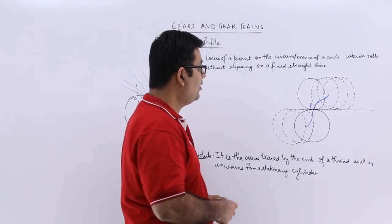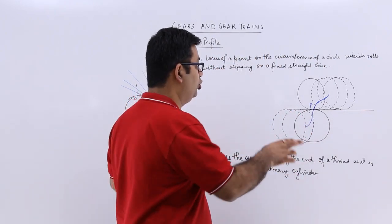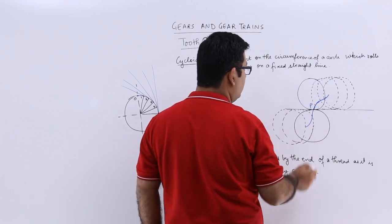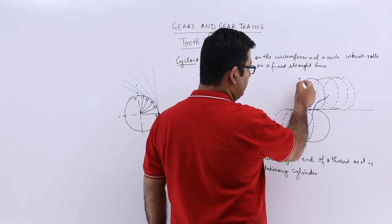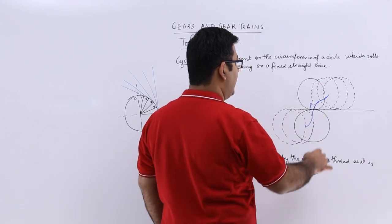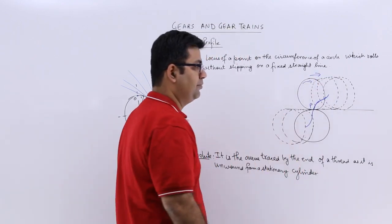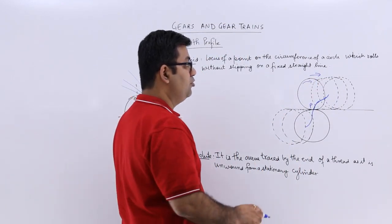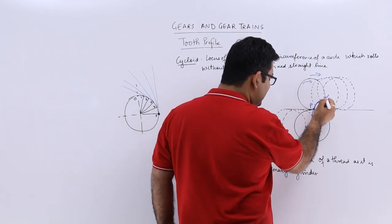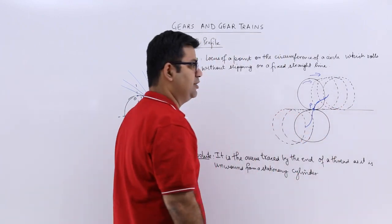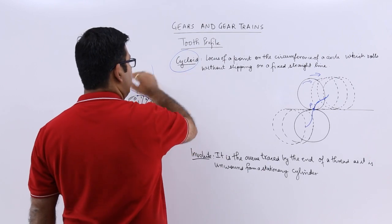So if you talk about the line, this is the fixed straight line and the circle on top is this dark colored bold circle and the point on the circumference of this circle is let us say this point P. Now this is rolling in this direction without slipping. So if you trace the locus of this point, as this circle rolls in that direction, you get a certain curve. That curve is called a cycloid.